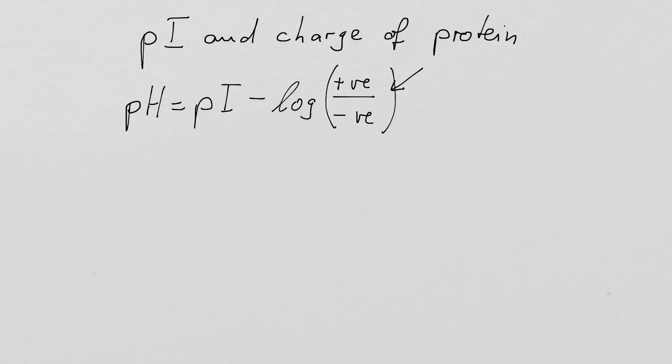So what we can do is we rearrange this equation. We get log positive over negative equals pI minus pH.